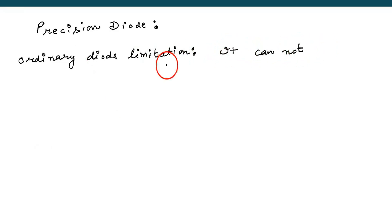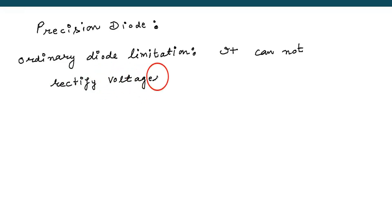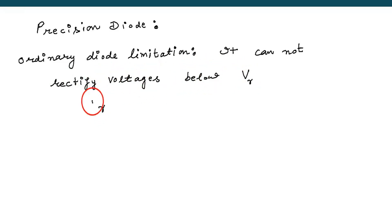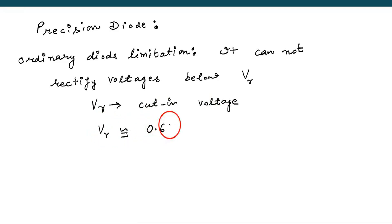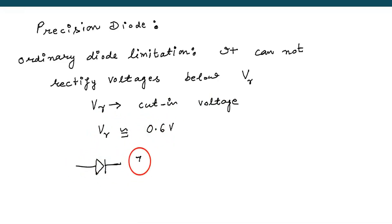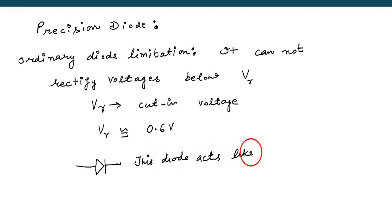An ordinary diode has a limitation — it cannot rectify voltages below 0.6V. V-gamma, which is called the cut-in voltage, is 0.6 or 0.7 for a diode. So it is a limitation of the diode; it cannot rectify the voltage below 0.6V.